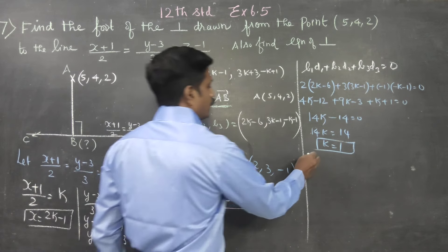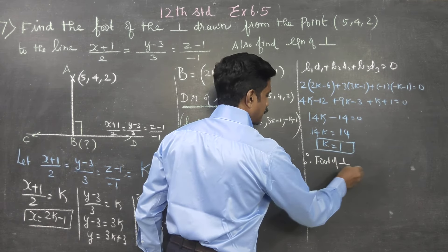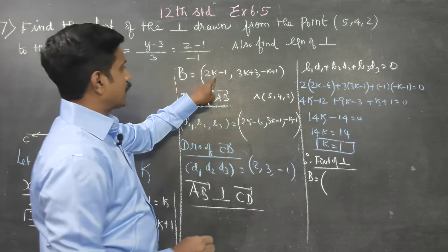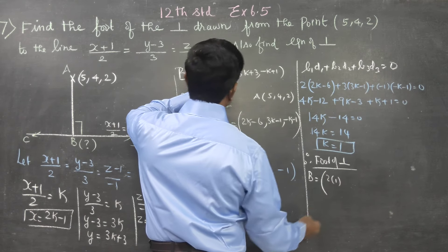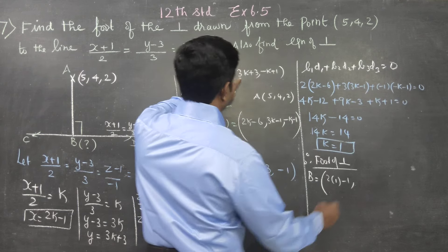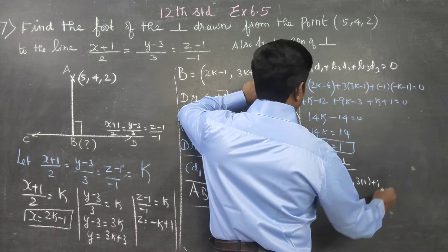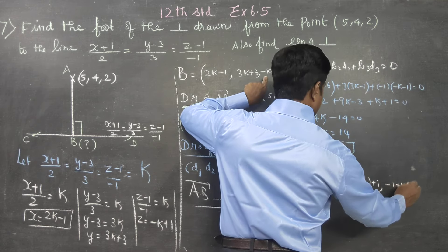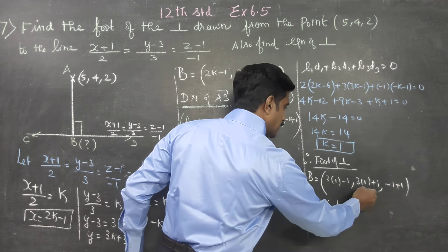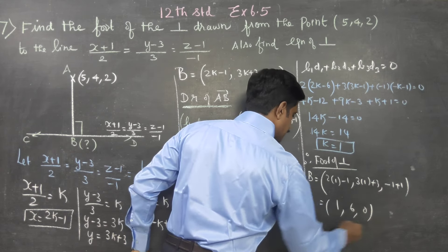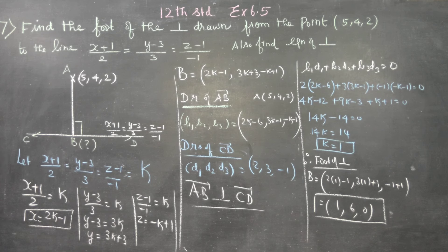Therefore, the foot of the perpendicular B is found by substituting k = 1: x = 2(1) - 1 = 1, y = 3(1) + 3 = 6, z = -(1) + 1 = 0. Therefore, the foot of the perpendicular is B = (1, 6, 0).